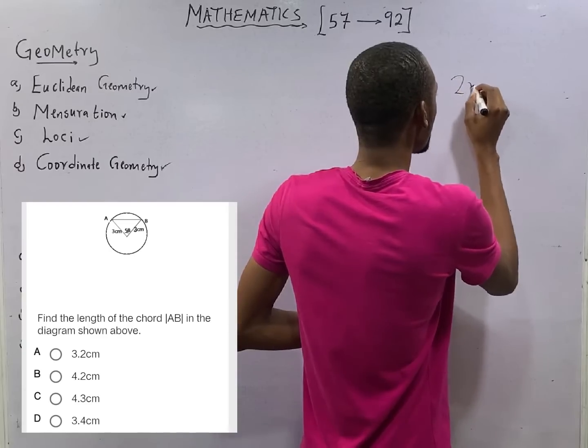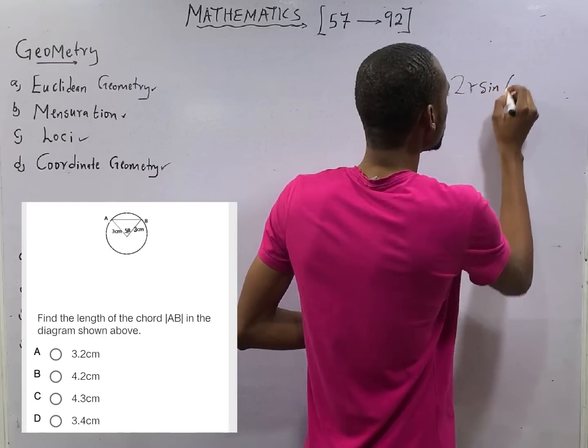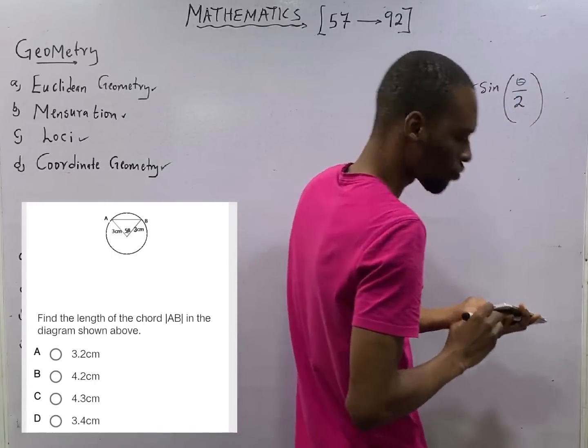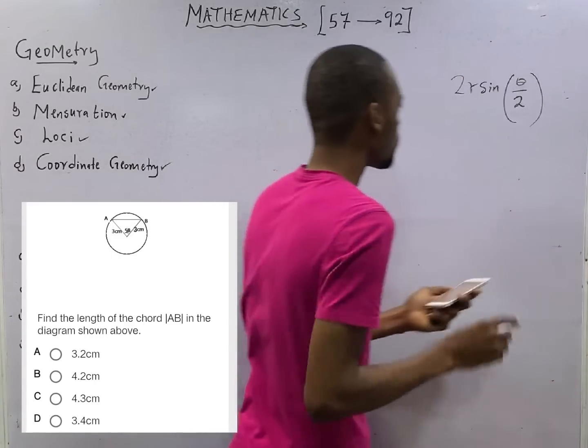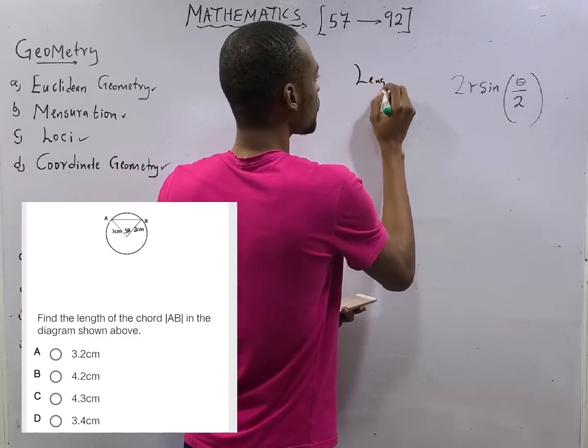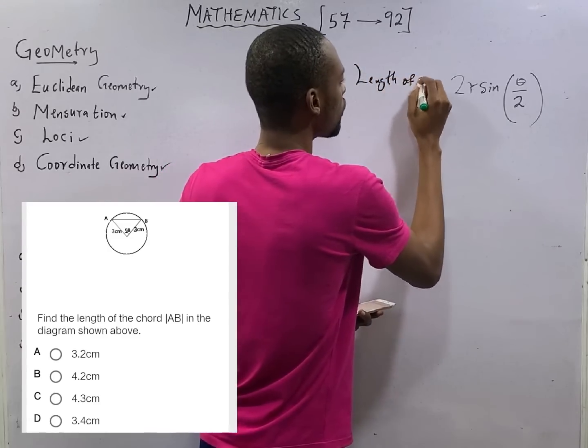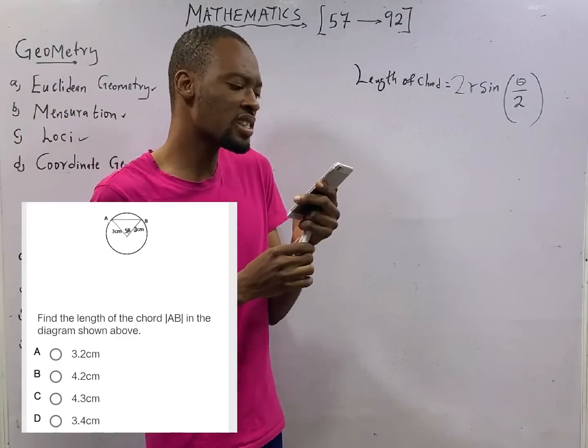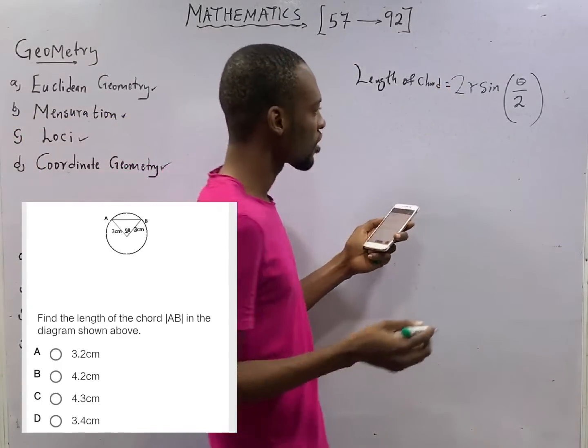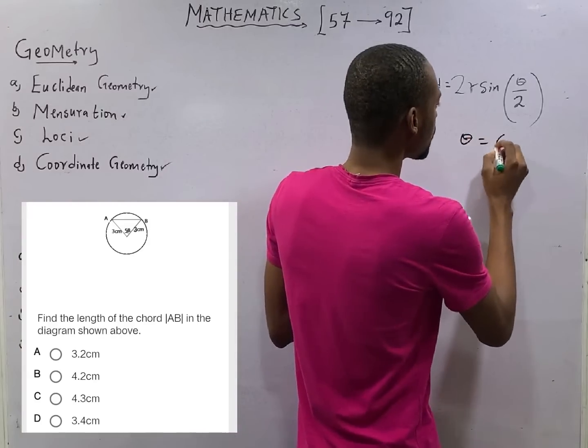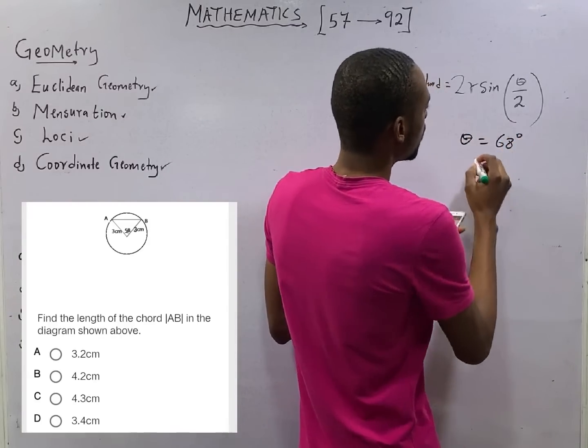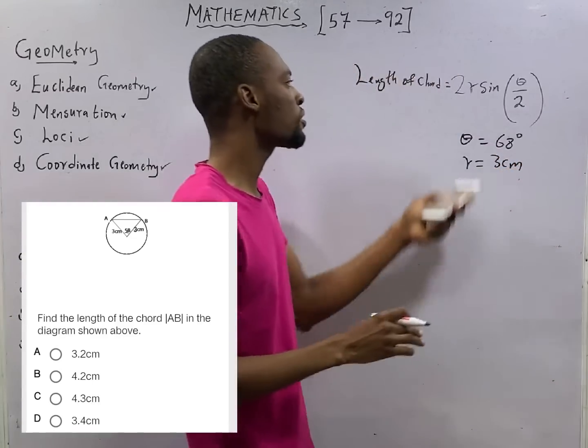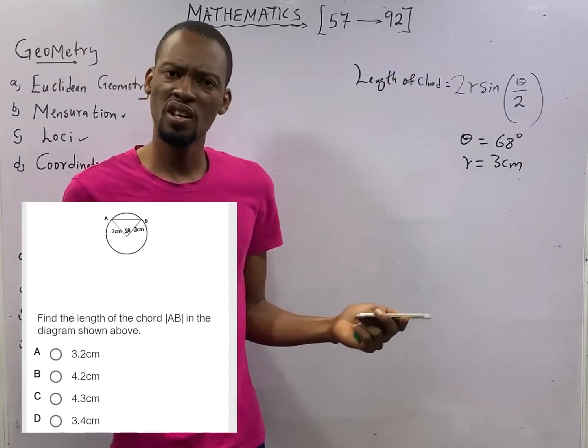Length of chord is 2r sin(θ/2). That is length of chord of a circle. From what I can see in this diagram, theta equals 68 degrees and radius is 3 cm. You can simply substitute and get your answer.